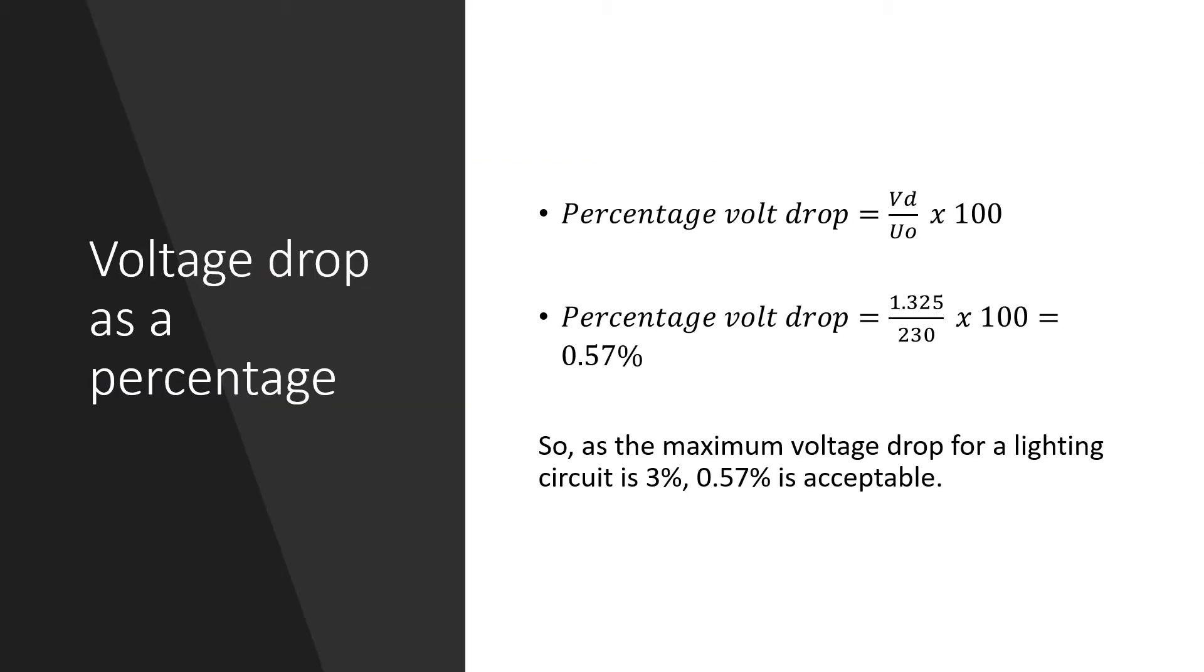So as the maximum permissible volt drop is expressed as a percentage, it is useful to convert the actual volt drop to a percentage when justifying the answer. For the example in the previous slide, the maximum volt drop for a lighting circuit is 3%.